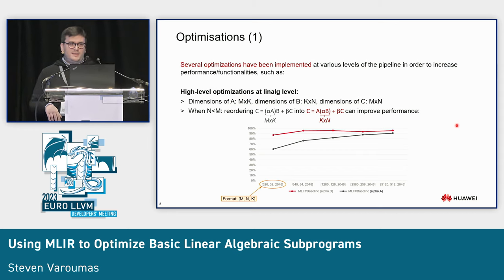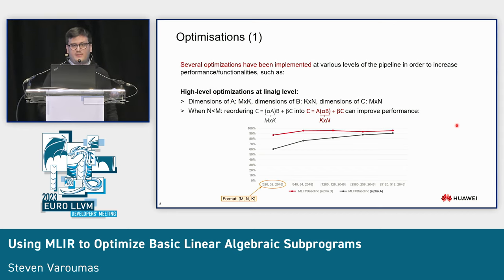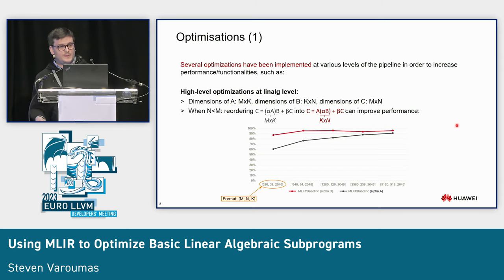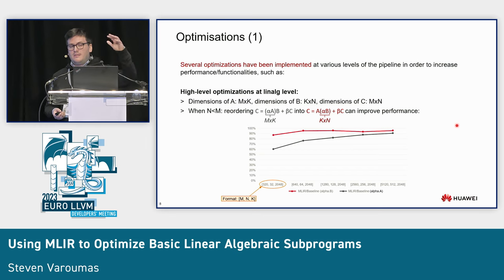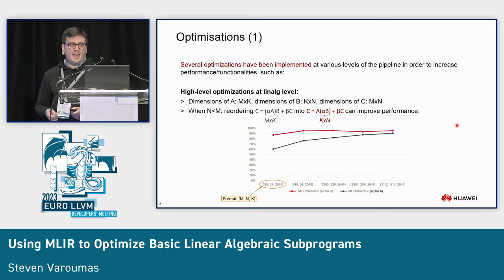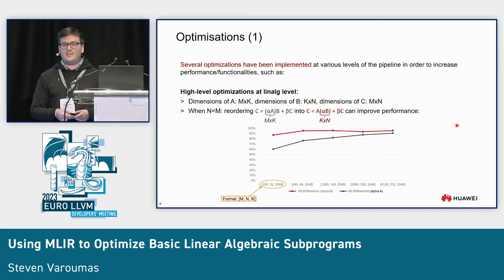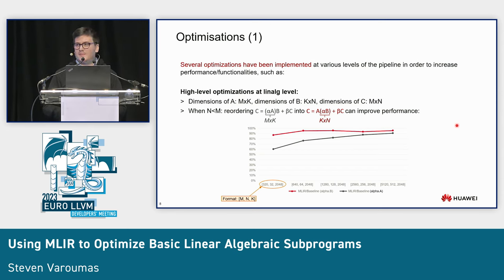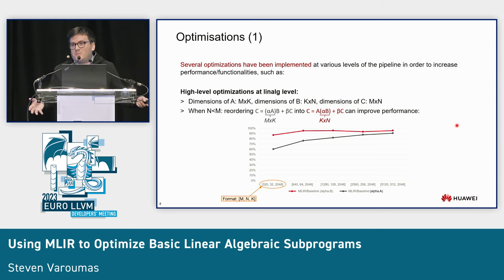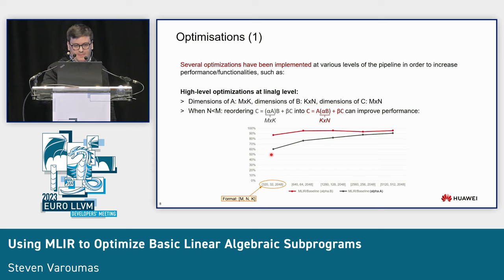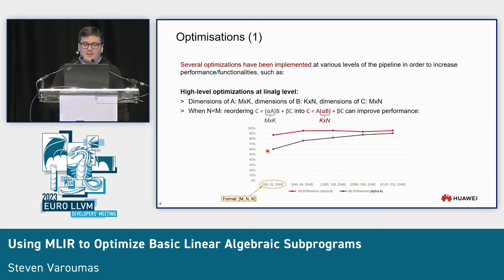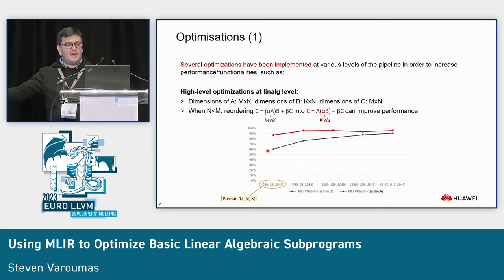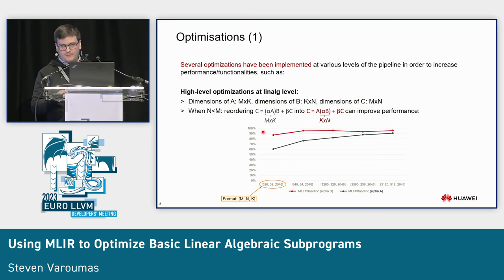We have implemented several optimizations at different levels of the pipeline to improve performance. At the high linalg level, for example in GEMM, if the N dimension is smaller than M, it's worth moving the multiplication by alpha to the B matrix, doing only K×N operations instead of N×K. This is basic but can improve performance significantly — before we were at about 60% of KPL, and by multiplying alpha by B instead, we jump to almost 90%.